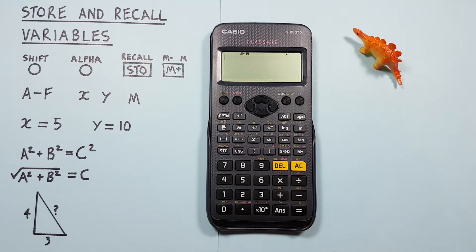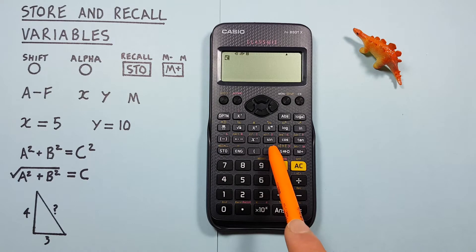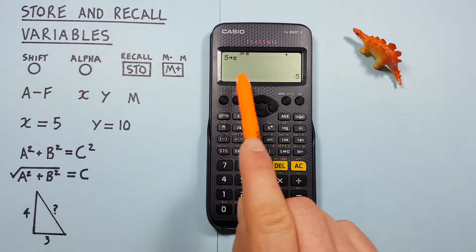If we just want to store a value, like for example 5 into X, we do this by placing the 5 on the screen and then pressing the STO key and then X. There we see 5 into X, that's been stored.